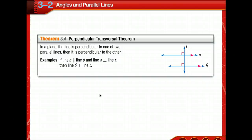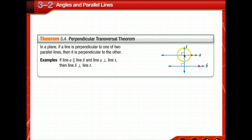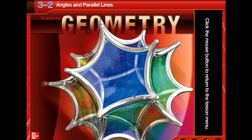There is a special relationship when the transversal of two parallel lines is a perpendicular line. The Perpendicular Transversal Theorem states that in a plane, if a line is perpendicular to one of two parallel lines, then it is perpendicular to the other. Note that the symbol for perpendicular and the symbol for parallel are different. If the transversal is perpendicular to one of the parallel lines, it is perpendicular to the other. You are now ready to begin the exercises.